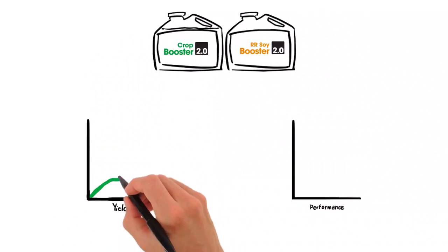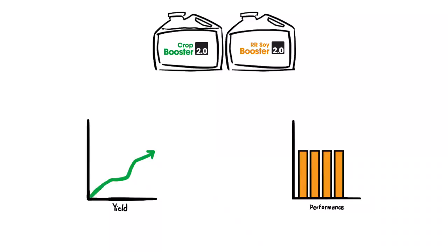Based on the proven CropBooster and RR SoyBooster products, these new formulations with the addition of nutrients and organic acids provide even better, more consistent performance.